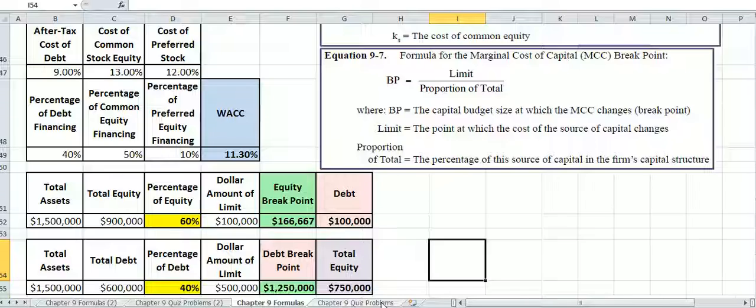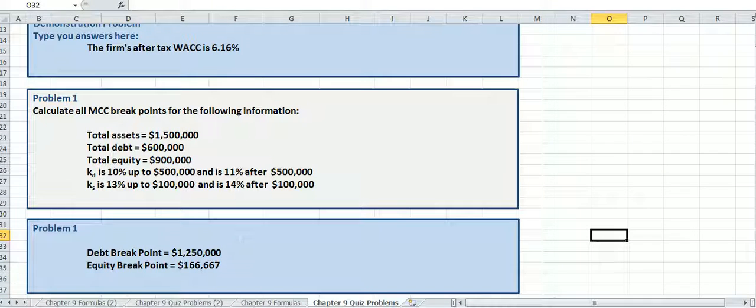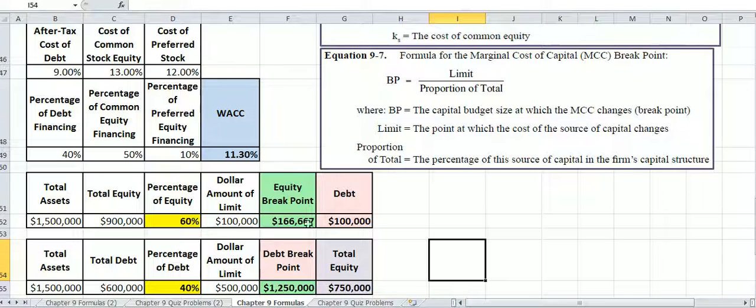So our debt breakpoint should be $1,250,000, and our equity breakpoint $166,667. All right. Now, what this is telling you, just real quick, is that you want to always maintain your capital structure or your proportion of equity to debt of 60%, 40%.